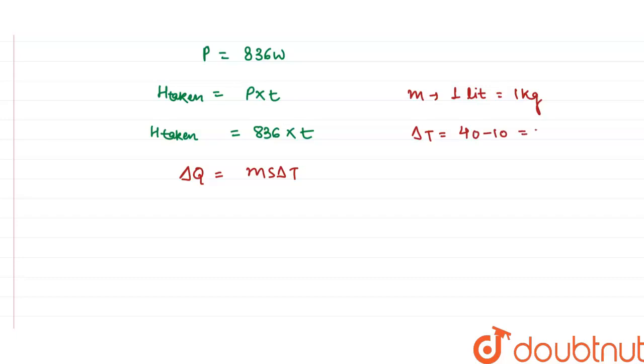And s is the specific heat capacity of water and the value of specific heat capacity for water is 4180 joule per kilogram per degree centigrade. Now putting all the values, we will have delta Q equals to, suppose this is my equation 1, delta Q equals to 1 into 4180 into 30, this is my equation 2.